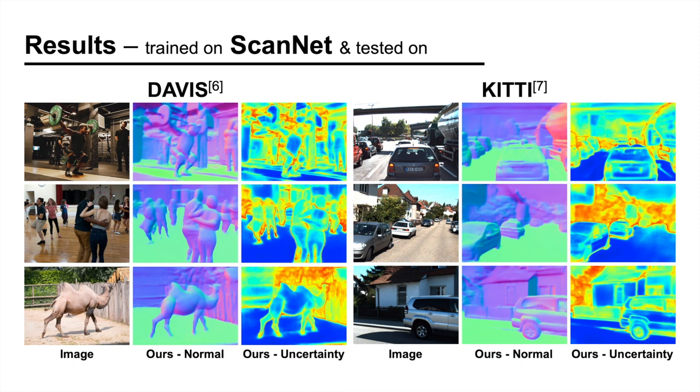Here, we demonstrate the generalization ability of our method. We trained the network on ScanNet and tested on Davis and Kitty. The results show that the network generalizes well for humans, animals, and cars, none of which were included in the training images.